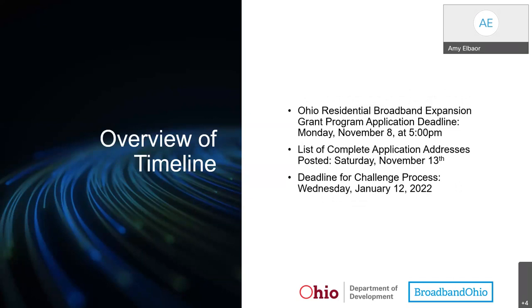Before we get into questions and answers, I wanted to review the timeline for the grant again. The grant program application deadline is Monday, November 8th at 5 PM. A list of complete application addresses will be posted on the Broadband Ohio website by Saturday, November 13th. The deadline for the challenge process is on or before Thursday, January 12th, 2022.